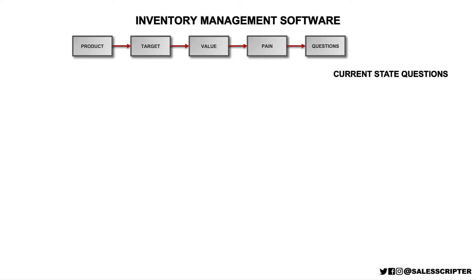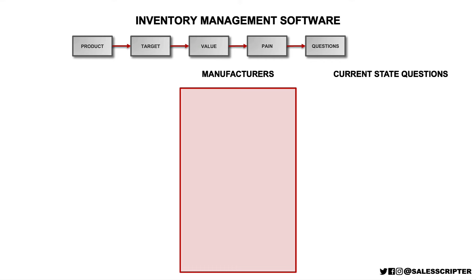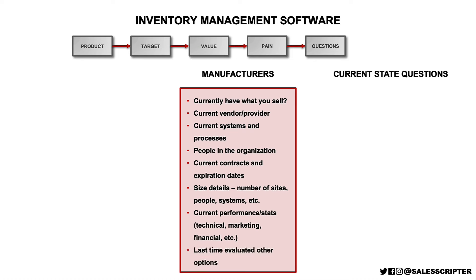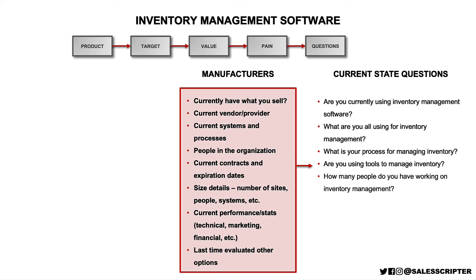There's another category of questions that I recommend you ask, which I refer to as current state questions. These are questions that try to identify what is the prospect doing in the area where you have something to sell. So if you sold cars, you should ask current state questions like: do you have a car today? What are you driving? What year is it? How many miles does it have? Do you own it or lease it? These questions will be unique depending on the product that you sell. I can't tell you exactly what current state questions you should ask, but I can provide a list of areas that you might want to think about: whether a prospect currently has what you sell, who they're working with, details about current systems or processes, people in the organization, current contracts or expiration dates, any sizing details, current performance, and the last time they looked at purchasing something similar to what you sell. With that list, we can come up with current state questions for selling inventory management software.